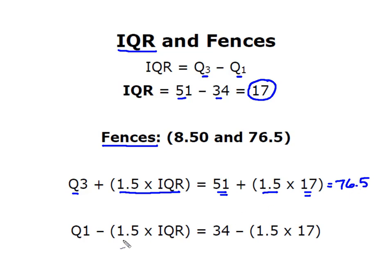So for my lower fence, I'm going to start at Q1. I'm going to move to the left. So minus one and a half times IQR gave me this 34 minus one and a half times that 17. And so I know my lower fence was 8.50.